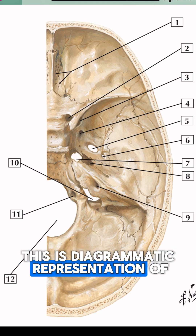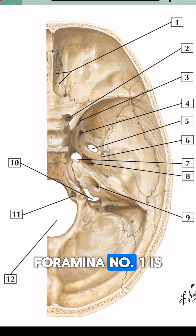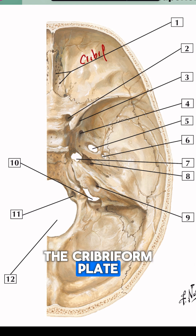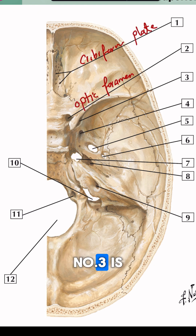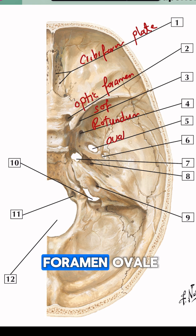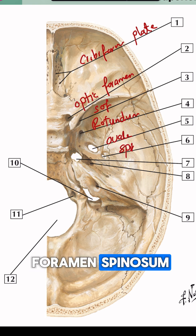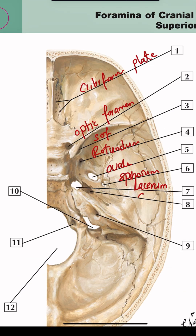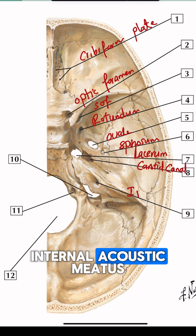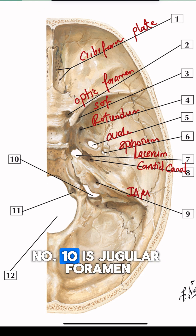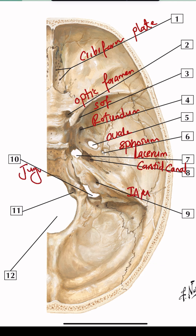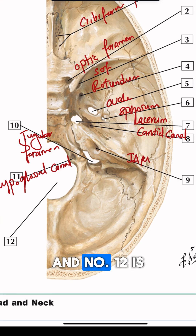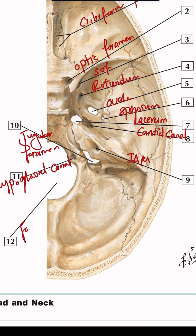This diagrammatic representation of the skull base foramina: number one is the cribriform plate, number two is the optic foramen, number three is the superior orbital fissure, number four is foramen rotundum, and number five is foramen ovale. Number six is foramen spinosum, number seven is foramen lacerum, number eight is the carotid canal, number nine is the internal acoustic meatus, number ten is jugular foramen, number eleven is the hypoglossal canal, number twelve is foramen magnum.